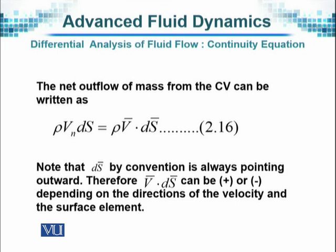The net outflow of mass from the control volume therefore can be written as ρ·V·dS, which is equal to this. Note that dS, the small change in the surface S, by convention is always pointing outwards. Therefore, V·dS can be positive or negative depending upon the direction of the velocity and the surface element.